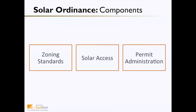There are three different components to a solar ordinance. First, there are zoning standards. Second, solar access and solar rights provisions. And finally, the permit application process.